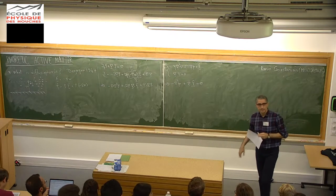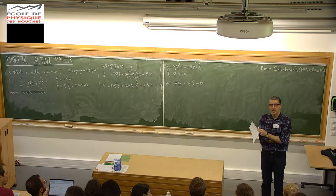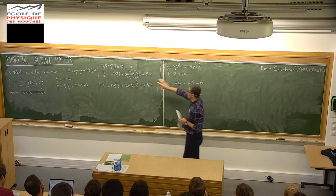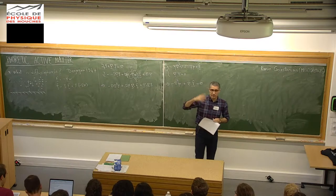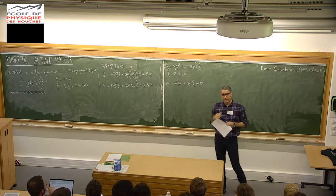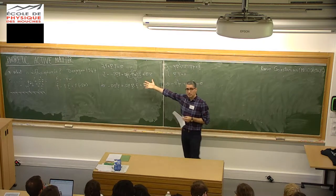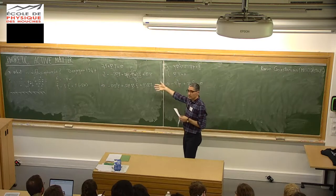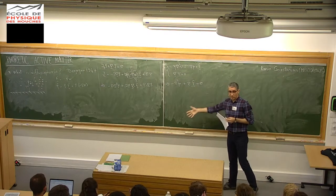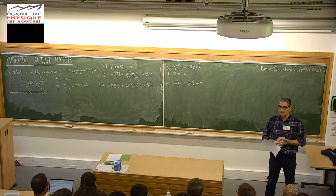Do we all agree on that? Hopefully. I have two equations. This is steady-state divergence of J equals zero — that's the first one. The Stokes equation is the second one. The third equation had two terms; one went away because of incompressibility and it's now equal to zero.